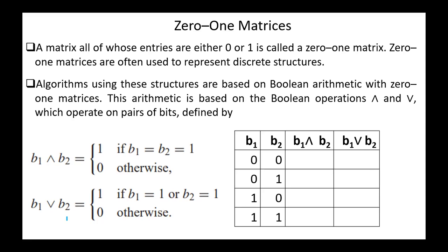0-1 matrices are often used to represent discrete structures. Algorithms using these structures are based on Boolean arithmetic with 0-1 matrices. This arithmetic is based on the Boolean operations AND and OR, which operate on pairs of bits.